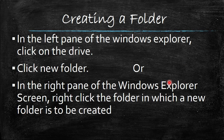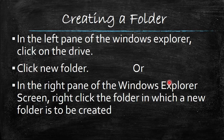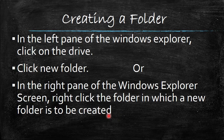The first topic is creating a folder. To create a new folder, in the left pane of Windows Explorer, click on the drive, then click New Folder on the top ribbon. Or, in the right pane of Windows Explorer, right-click the folder in which a new folder is to be created. These two methods can be used to create a new folder.